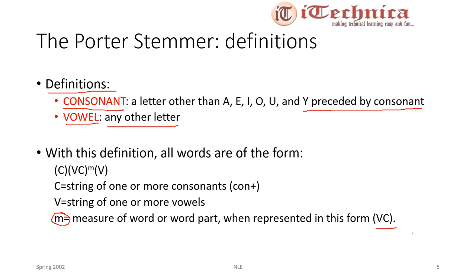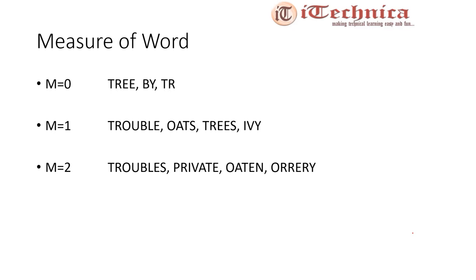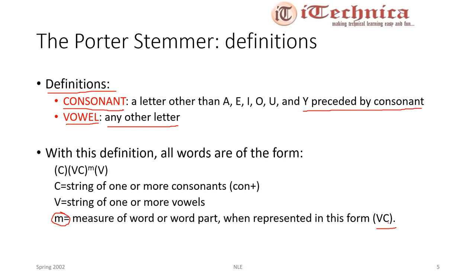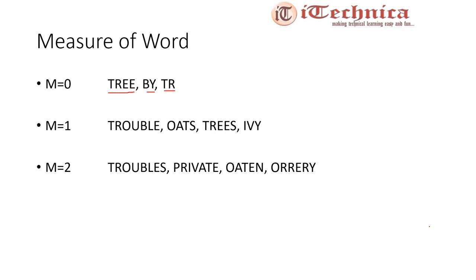Let us understand how to calculate the measure value m for a word. Consider the word tree: t and r are consonants, and the two e's are vowels. We have a consonant-vowel combination but no vowel-then-consonant combination, so m equals zero. Similarly, the words by and tr also have m equal to zero.